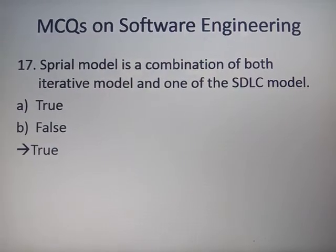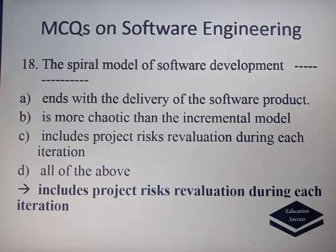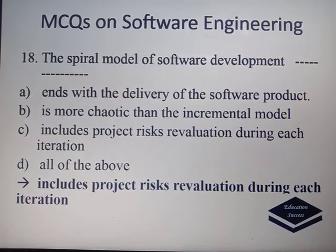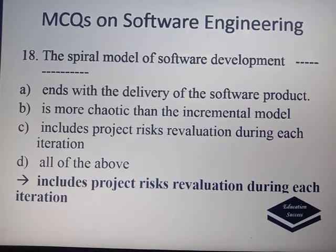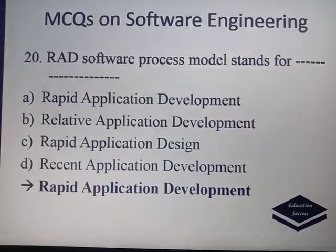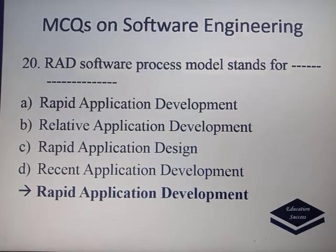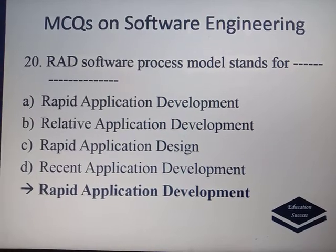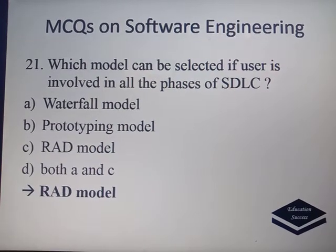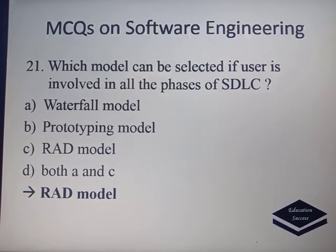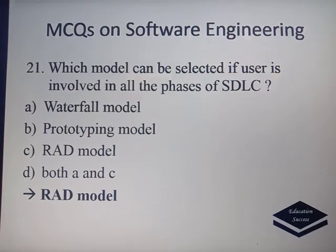The Spiral Model is a combination of both Iterative and one other SDLC Model — this is a true statement. The Spiral Model of Software Development includes Project Risk Re-evaluation during each iteration, so the correct option is C. RAD stands for Rapid Application Development Model, so the correct answer is Option E. If the user is involved in all phases of SDLC, the model is called the RAD Model.